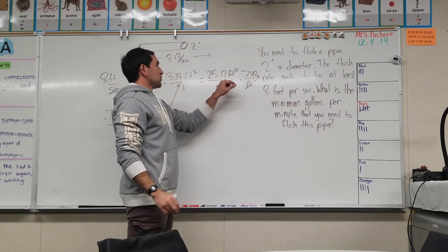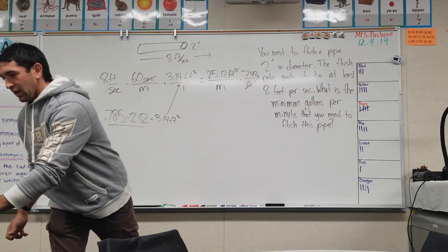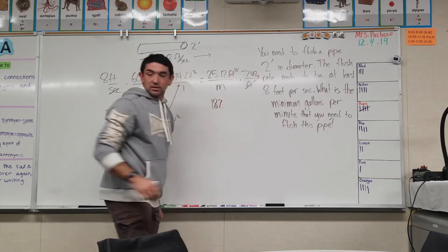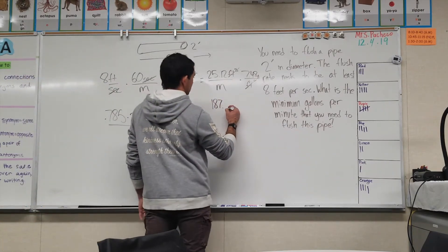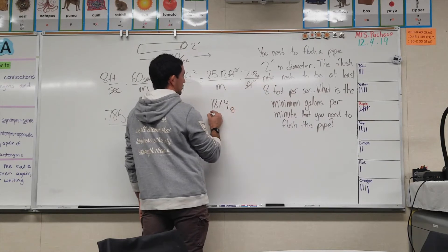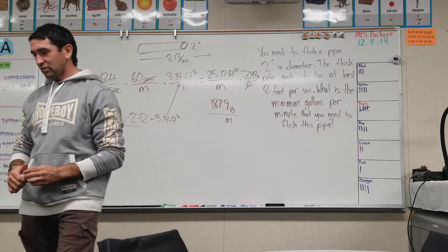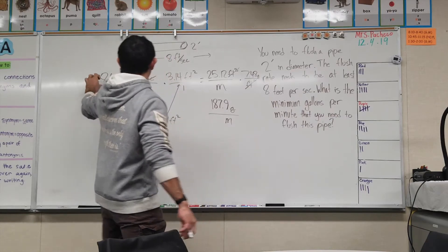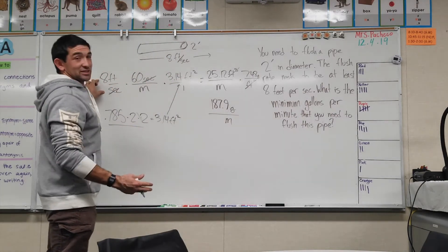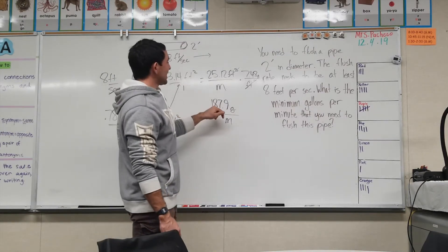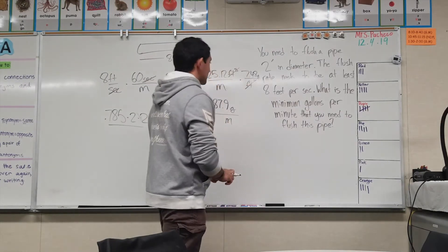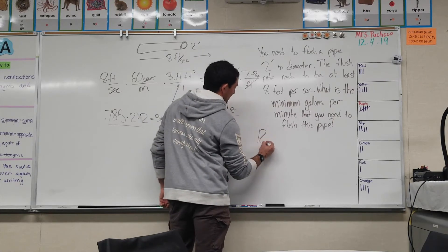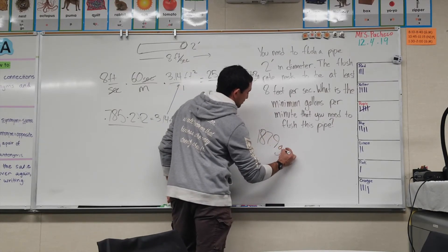We multiply 25.12 by 7.48 and you get 187.99 gallons per minute. So now you know that if the flush rate is eight feet per second, the equivalent flow rate is 187.9 gallons per minute. The answer to this question — the minimum gallons per minute needed to flush this pipe — is 187.9 gallons per minute.